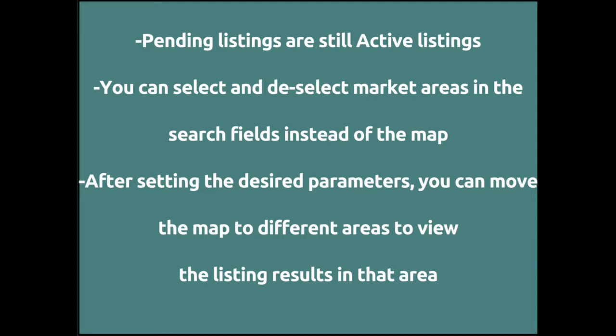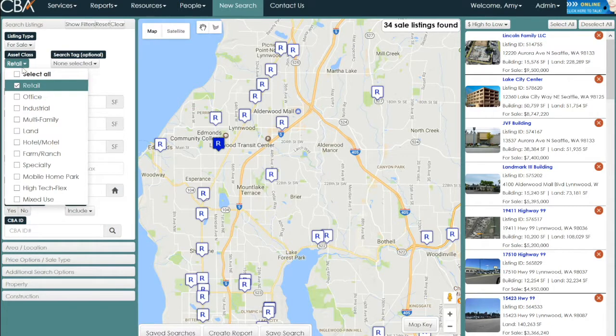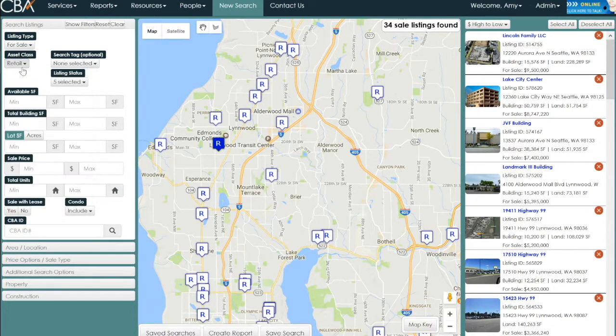Remember that pending listings are still active listings. You can select and deselect market areas in the search fields instead of the map. After setting the desired parameters, you can move the map to different areas to view the listing results in that area. You can always search multiple asset classes together — we've just chosen to use one asset class here.